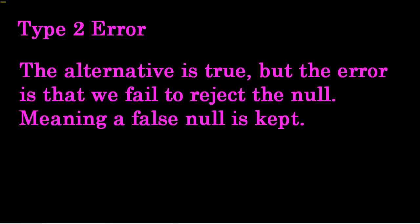A type 2 error, again another really creative name, but a type 2 error is the alternative is true, but the error is that we fail to reject the null, meaning a false null is kept. So the alternative is really true. The guy really is guilty. He really did commit the crime, but we make an error, and a guilty man goes free. So first and foremost, these do not have the most original names. So the number one error is that kids just mix them up.